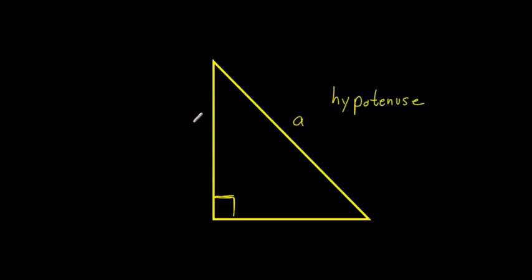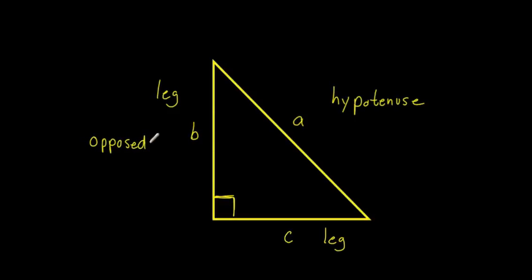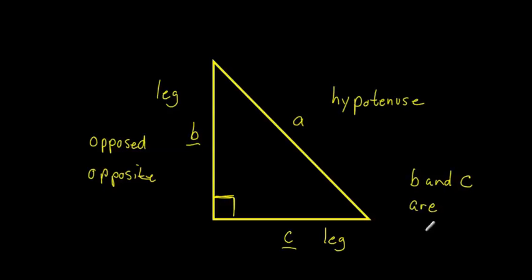If we call this side B and this side C, we can say that side B is called a leg, and side C is also called a leg. We would say that side B is opposite side A, and the same thing for side C. If we were talking about how side B and side C are related to each other, we would say that they are what's called adjacent.